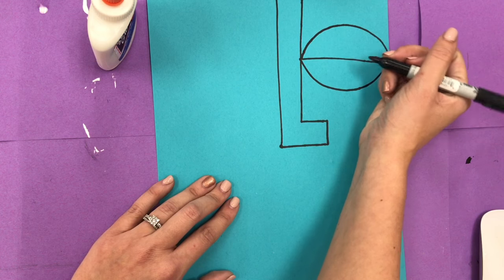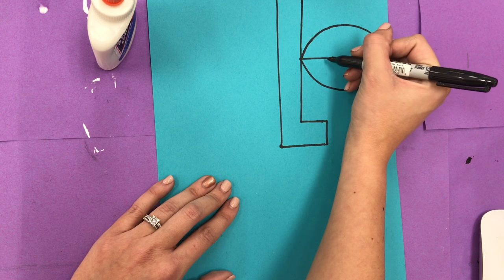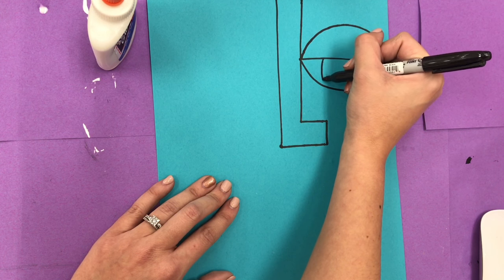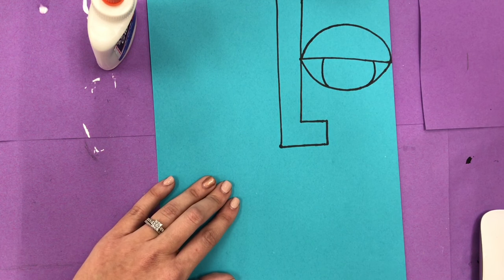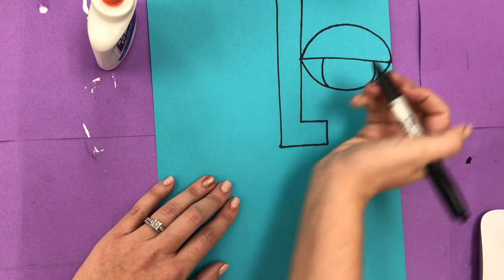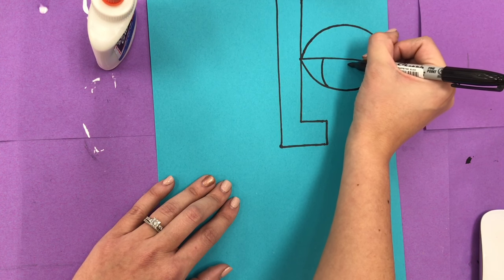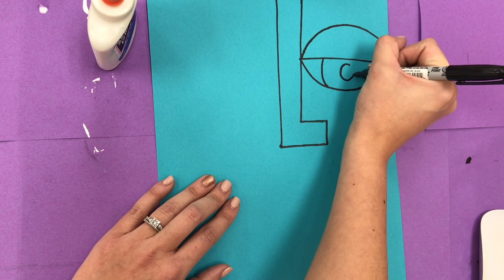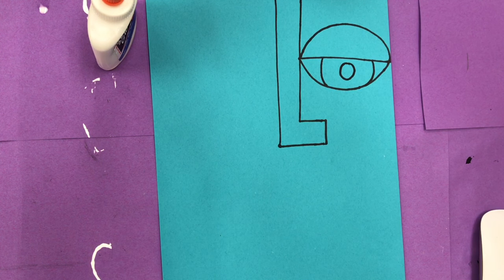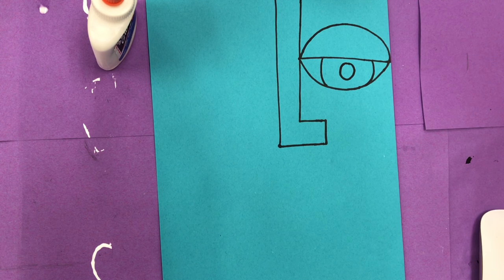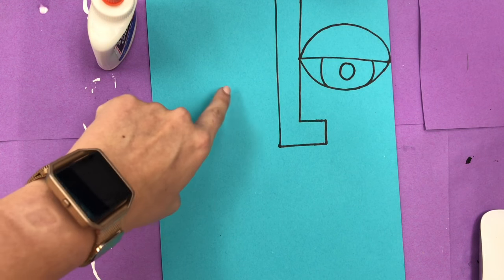So now I have my eyelid and I have the part that will become my eyeball. So now I need to make my iris. Usually you can't see all of your iris. You can just see part of it. So I'm going to make two rounded lines. And then you have your pupil, which is the black part in the middle. So we're not going to make this black, we're just going to make it a circle. So now I'm going to make my other eye.